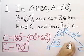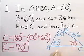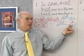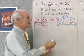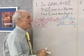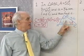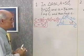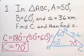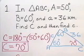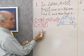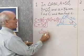So angle C is 70 degrees, and I'll label my triangle with 70 degrees for angle C. Now, the next thing I want to do is find the length of side C, which is opposite angle C. To do that, I'm going to use the law of sines. What I'm going to say is this: C is to the sine of the angle opposite, which is angle C — so C is to sine 70.